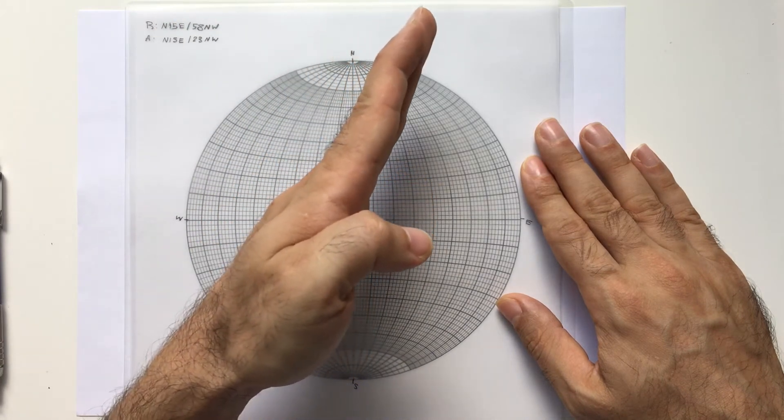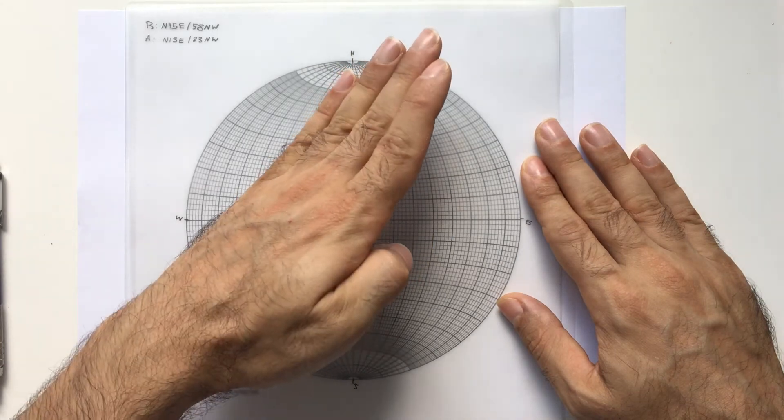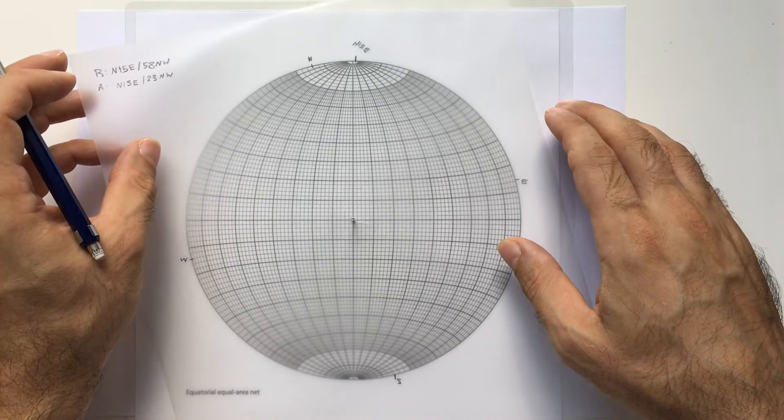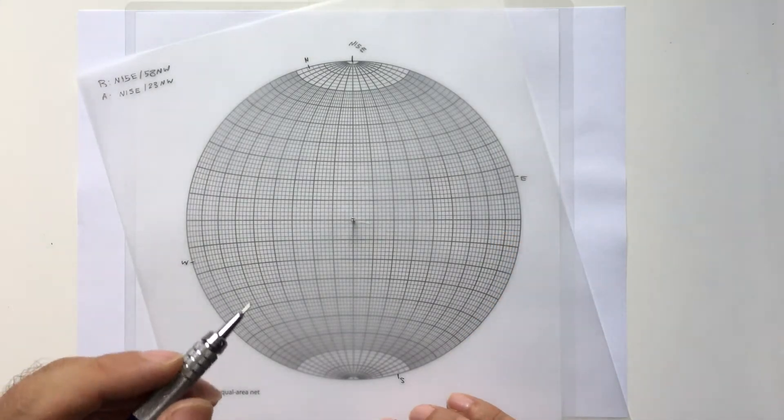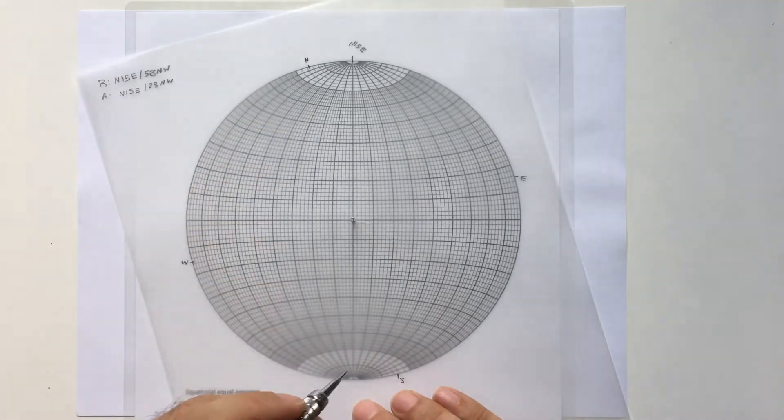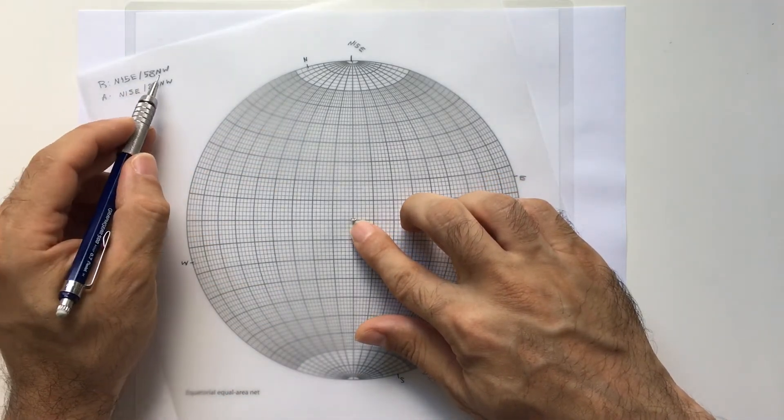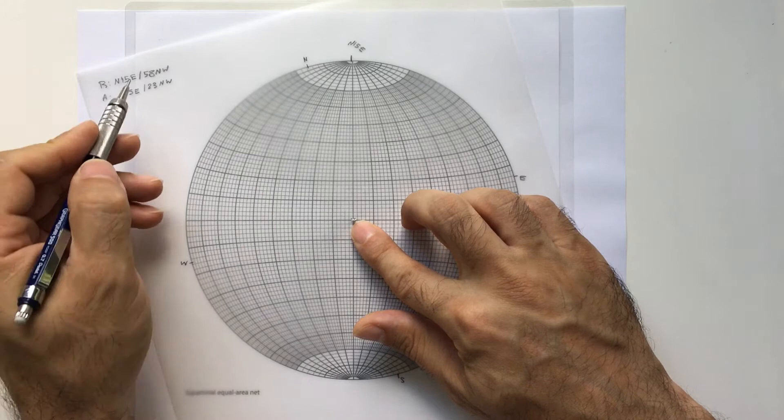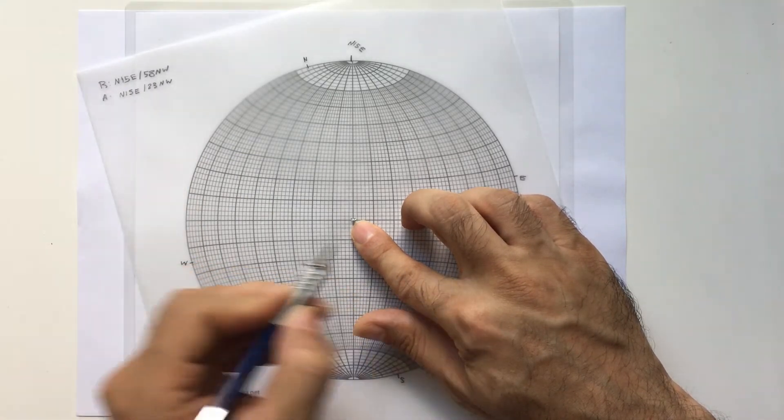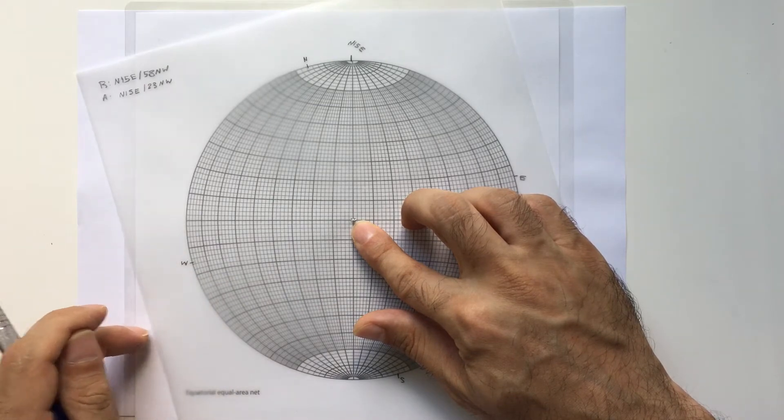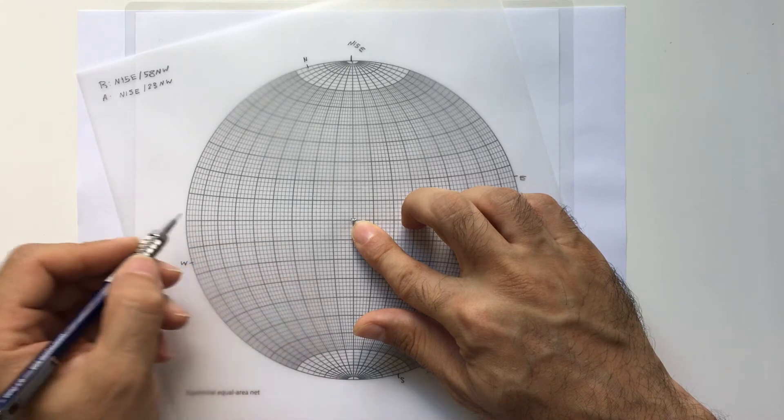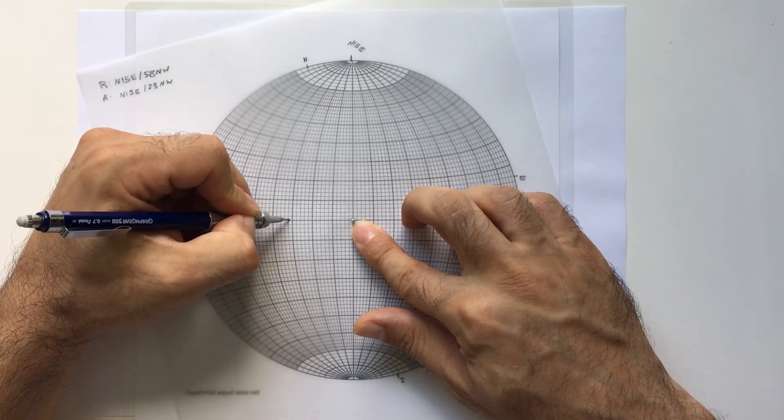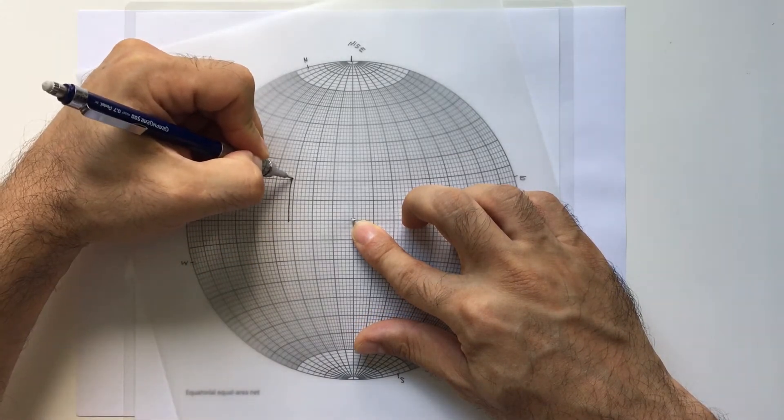If this is my bedding, this is a vertical bed. The strike is 15 and it's dipping 58 degrees towards northwest. So I have N15E. Rotate my tracing paper and place N15E along the north-south great circle. Count 58 degrees from the northwest. For counting 58 degrees, you count along the west-east line because we are using the stereonet as a protractor. So 58 degrees: 10, 20, 30, 40, 50. This is 58. You trace that great circle.